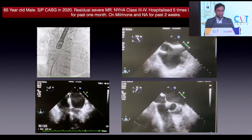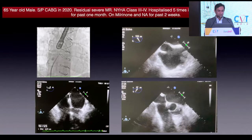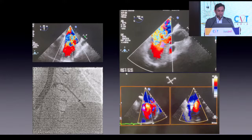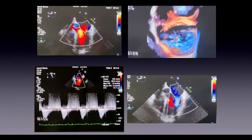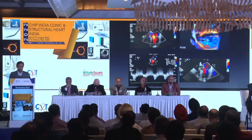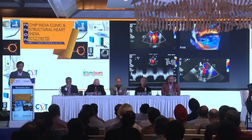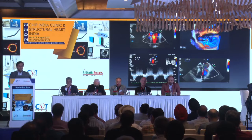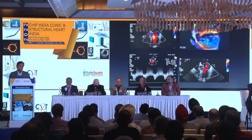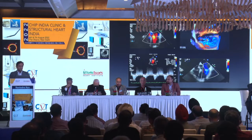Another case: severe functional MR with torrential MR on TEE and 3D TEE showing no mitral regurgitation after clip implantation. Remember, sometimes you can under-assess residual MR because the patient is under general anesthesia; you can raise blood pressure, give isoproterenol to increase heart rate, and reassess — this is how it looks on 3D TEE with deployed clip and trivial to mild residual mitral regurgitation.